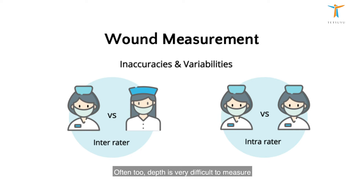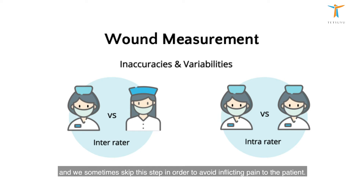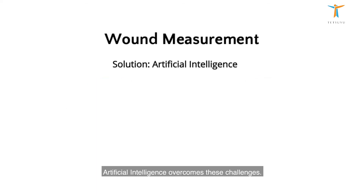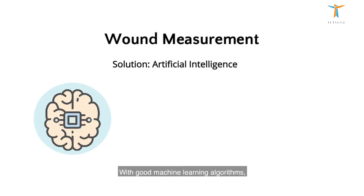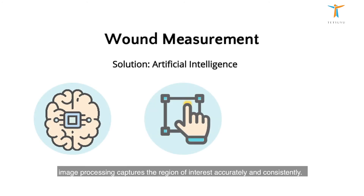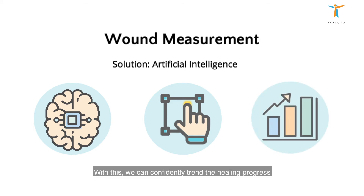Often, depth is very difficult to measure and we sometimes skip this step in order to avoid inflicting pain to the patient. Artificial intelligence overcomes these challenges. With good machine learning algorithms, image processing captures the region of interest accurately and consistently. It automates measurements for length, width, and depth, and with this, we can confidently trend the healing progress and plan appropriate interventions when necessary.